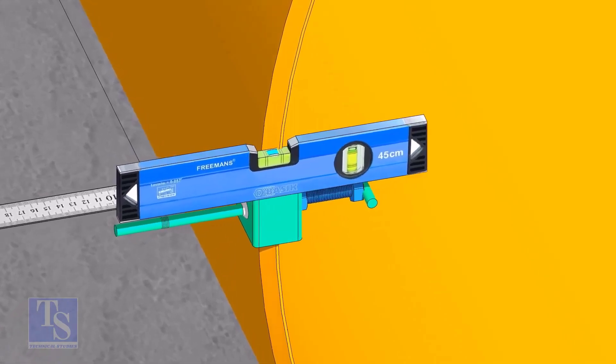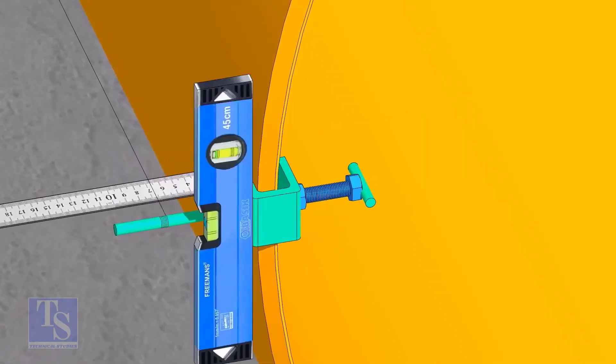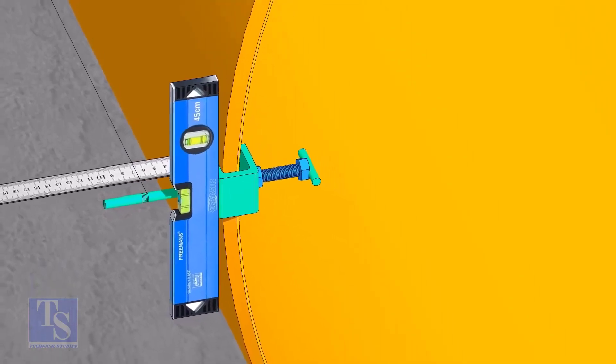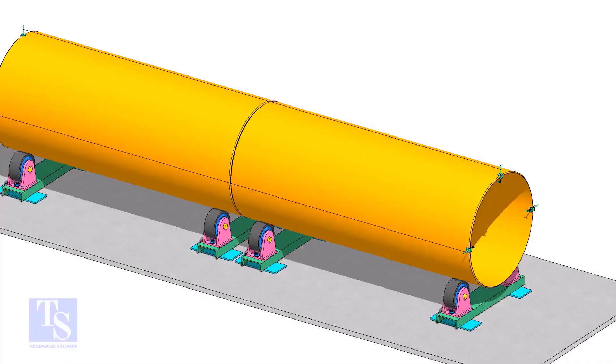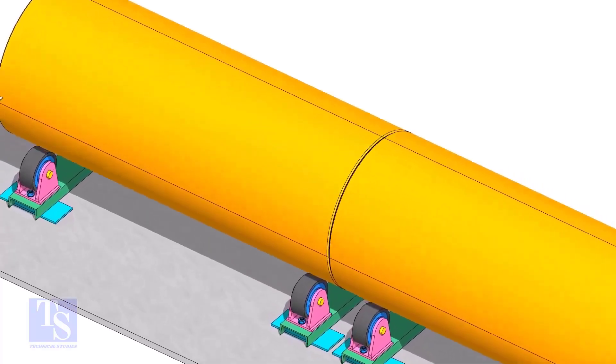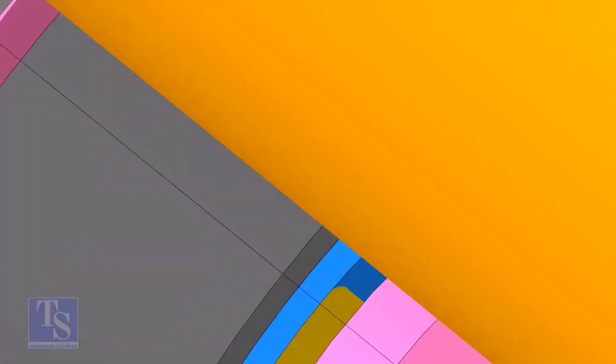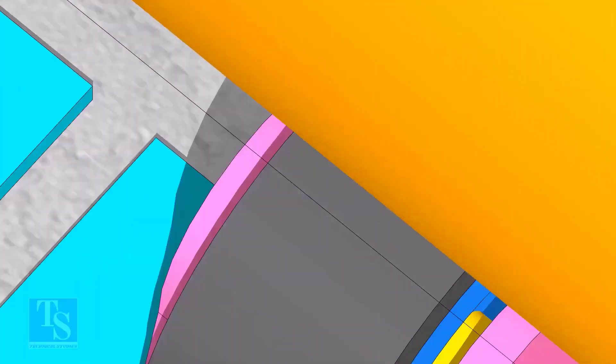As you put the clamp roughly 90 degrees apart, make sure the clamps are level. Tie the piano wire tightly on these clamps. Make sure the distance between the shell to the piano wire is equal at both ends.